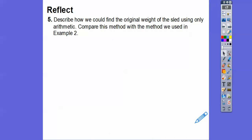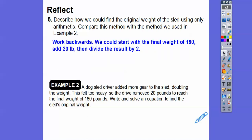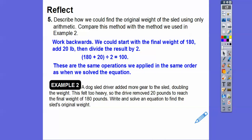We can also find the original weight using only arithmetic — compare this with the equation method. Starting at 180 and working backwards: add 20 pounds to get 200, then divide by 2 to get 100. These are the same operations we applied when solving the equation, just in the order we applied them — confirming that we do order of operations backwards when solving equations.